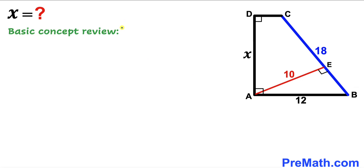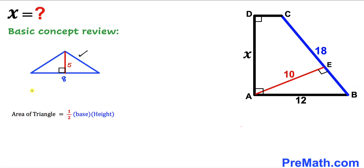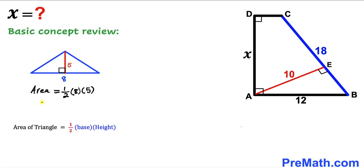Before we proceed any further let me go over the basic concepts. Let's focus on this blue triangle whose base is 8 and height is 5. Recalling the area of a triangle formula: area equals a half times base times height. So the area of this triangle is one half times 8 times 5, which simplifies to 20 square units.